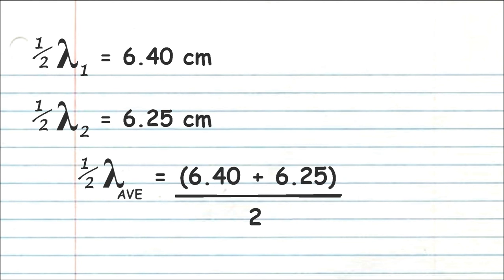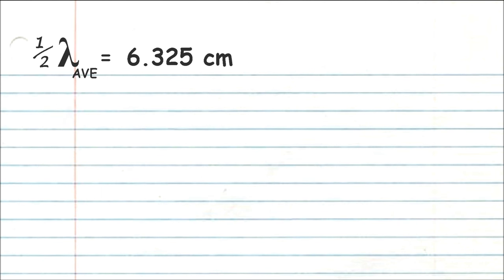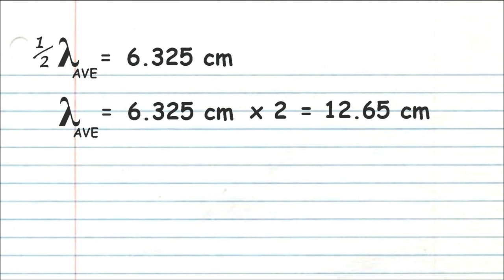You know how to take an average, right? Add up your measurements together and then divide it by the number of measurements that you have. In my case, it was just two. And so I get an average half wavelength. But I want to get a full wavelength. So I'm going to take this average half wavelength and I'm going to multiply it by two to get the average wavelength of my microwaves.